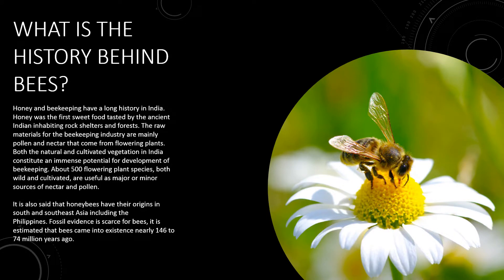What is the history behind bees? Honey and beekeeping have a long history in India. Honey was the first sweet food tasted by the ancient Indian inhabiting rock shelters and forests. The raw materials for beekeeping industry are mainly pollen and nectar that come from flowering plants. Both natural and cultivated vegetation in India constitute an immense potential for development of beekeeping.